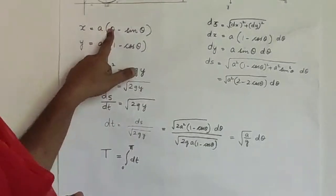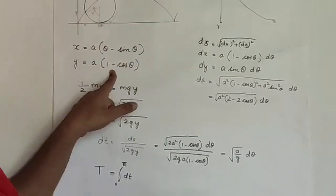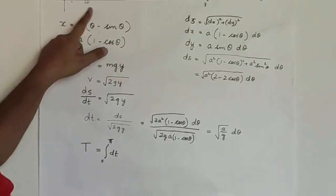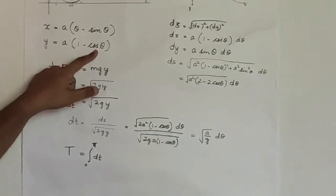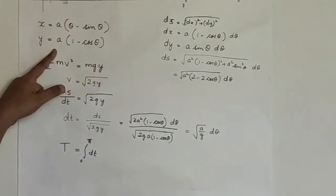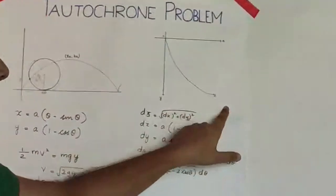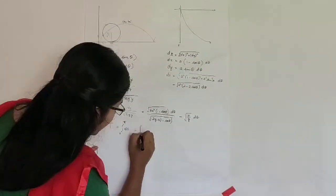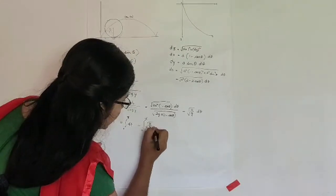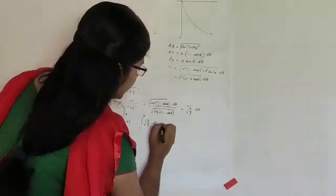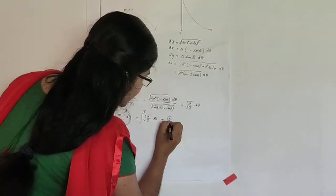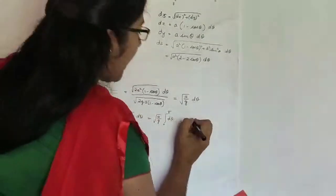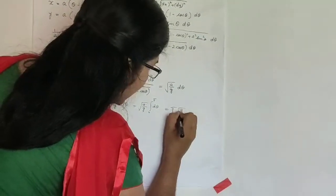Substituting θ = 0 gives x = 0 and y = 0. Substituting θ = π gives sin π = 0 so x = πa, and cos π = −1 so y = 2a. Therefore t equals the integral from 0 to π of root(a/g) dθ, which equals root(a/g) times π.